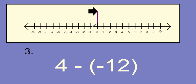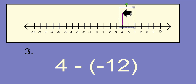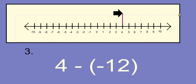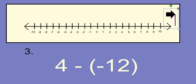Number three: four minus negative twelve. We start out facing the positive numbers and go to four. We see the first negative sign, so we flip the arrow. Then we flip it back again because of the second negative sign on the twelve. Once we've done all our flipping, we go twelve places to the right: one, two, three, four, five, six — and six more. We end up at sixteen.